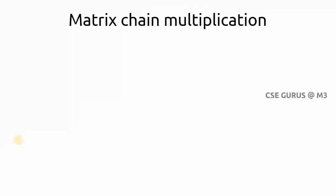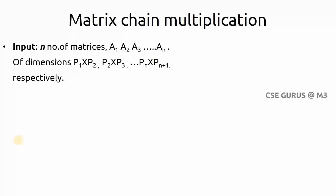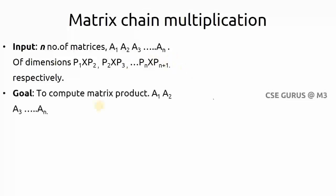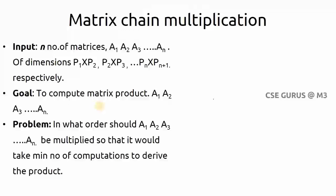We will see what the problem statement is. The input we are giving is the number of matrices A1, A2 up to An, with their dimensions. Matrix multiplication is possible only if the column size of the first matrix equals the row size of the second matrix. Our goal is to compute the matrix product A1, A2 up to An, but our main aim is to find in what order A1 through An should be multiplied so that it takes the minimum number of computations.